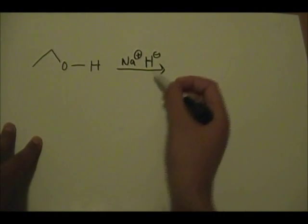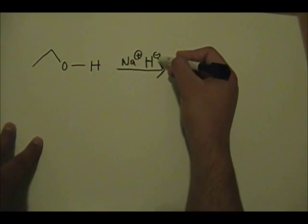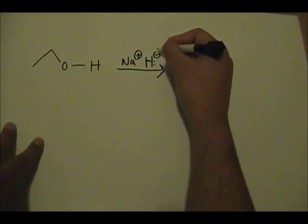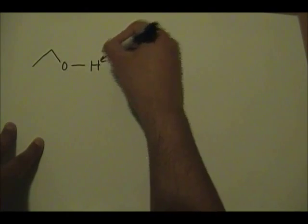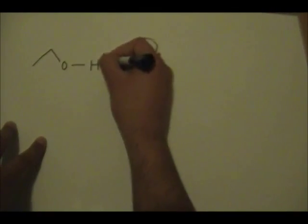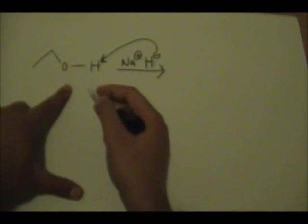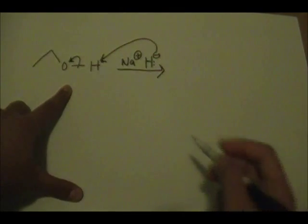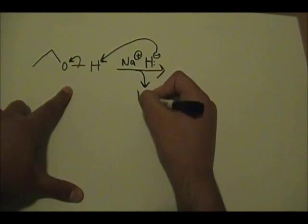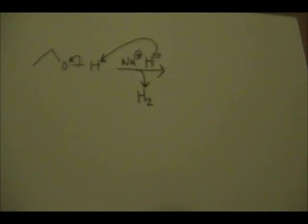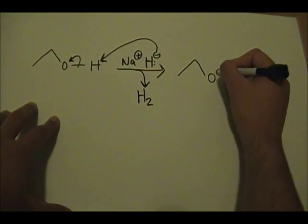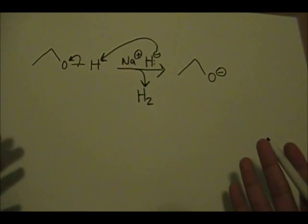In the first step, this hydrogen with its lone pair will form a bond with the hydrogen on the alcohol. The pair of electrons goes onto this oxygen. The byproduct of this step is H2, diatomic hydrogen. The result is this oxygen now bearing a negative charge.